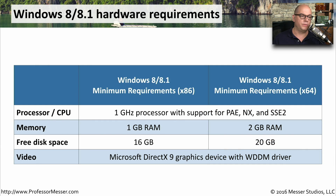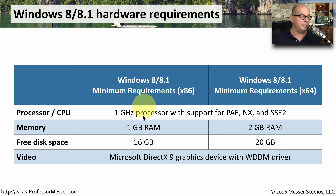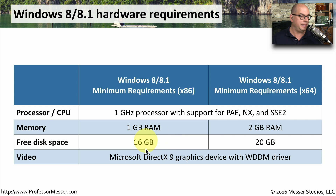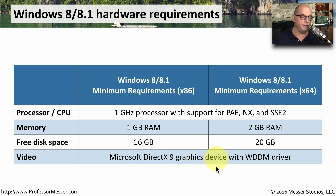The hardware requirements for Windows 8 and 8.1 are separated into 32-bit and 64-bit requirements. Both need at least a 1 gigahertz processor with PAE, NX, and SSE2 support. For the 32-bit version, you need at least 1 gigabyte of RAM; for the 64-bit version, 2 gigabytes. You need at least 16 gigabytes of free disk space for the 32-bit version and 20 gigabytes for the 64-bit version. Both also need to support video standardized with a Microsoft DirectX 9 graphics device running the Windows Display Driver Model standard.